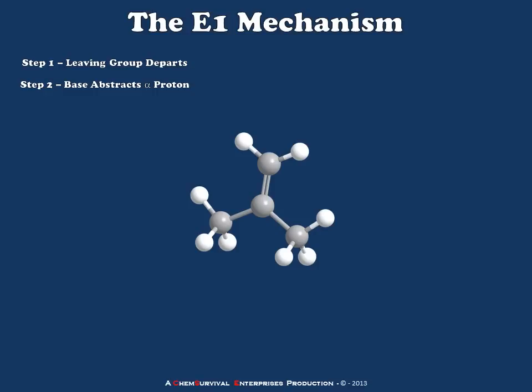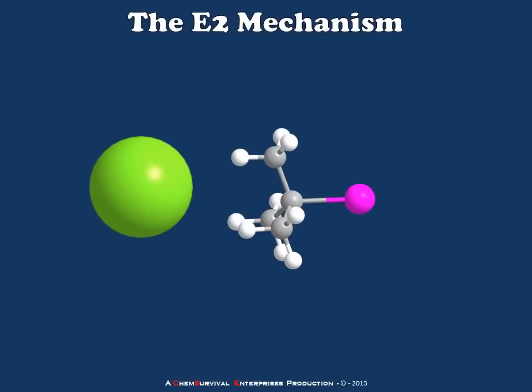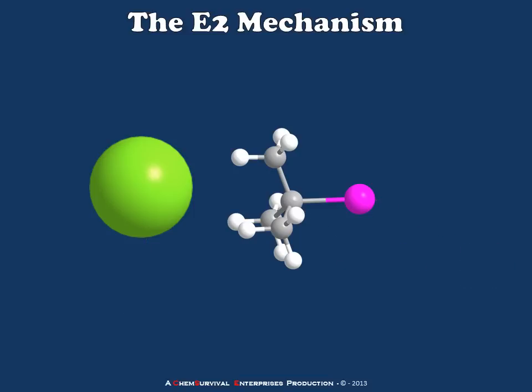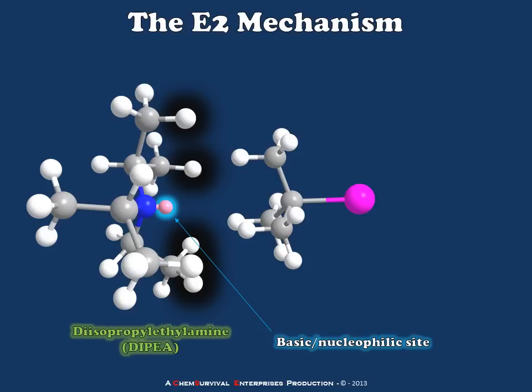Now let's take a look at the E2 mechanism using a similar substrate so that we can see the difference. In the case of the E2 mechanism, we're usually dealing with a bulky base or a bulky nucleophile — one which contains lots of entangling appendages, which make it difficult for the lone pair electrons from the nucleophile to access the electrophile. Here I've used another t-butyl halide with a poor leaving group, and I'm going to use a really large, bulky nucleophile. A great example of this is diisopropyl ethylamine.